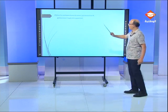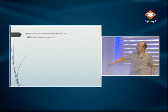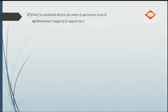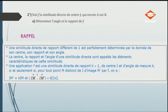Soit F la similitude directe de centre J qui envoie A sur K, c'est-à-dire l'image de J égale à J et l'image de A égale à K. On veut déterminer l'angle et le rapport de F. Rappel : une similitude directe de rapport différent de 1 est parfaitement déterminée par son centre, son rapport et son angle, qui sont ses éléments caractéristiques.